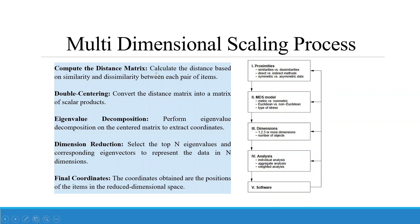In the analysis phase: compute the distance matrix by calculating the distance based on similarity and dissimilarity between each pair of items — the software will handle this automatically. Then perform double centering to convert the distance matrix into a matrix of scalar products. Next, perform eigenvalue decomposition on the standardized matrix to extract coordinates. Then apply dimension reduction by selecting the top N eigenvalues and corresponding eigenvectors to represent the data in N dimensions. The final coordinates — the positions of the items in the reduced dimensional space — are the final output.